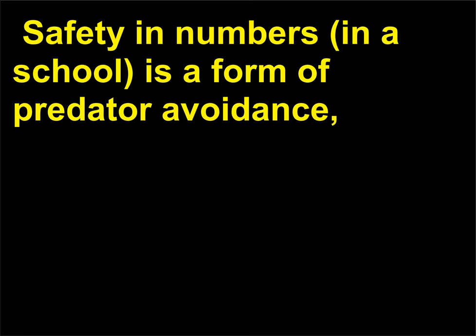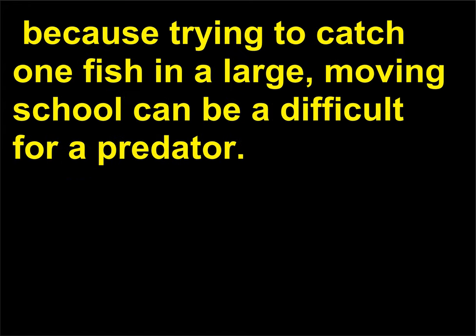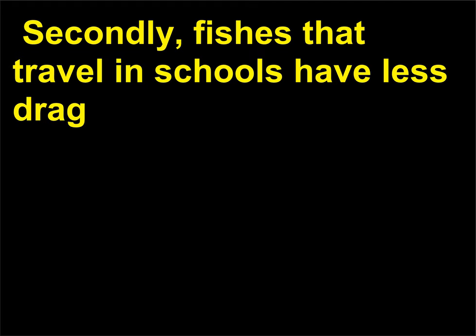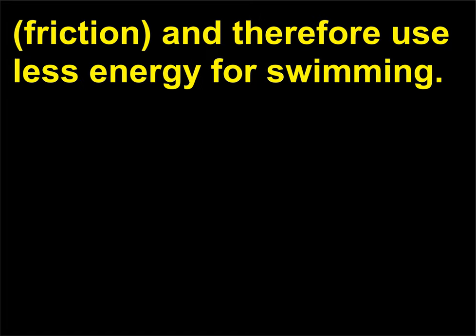Safety in numbers: in a school, is a form of predator avoidance, because trying to catch one fish in a large, moving school can be difficult for a predator. Secondly, fish that travel in schools have less drag and friction, and therefore use less energy for swimming.